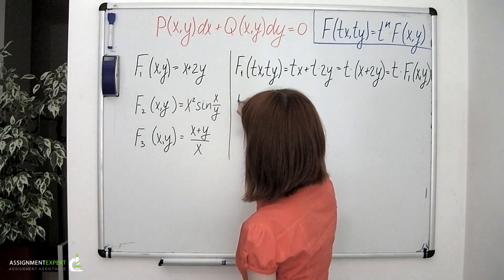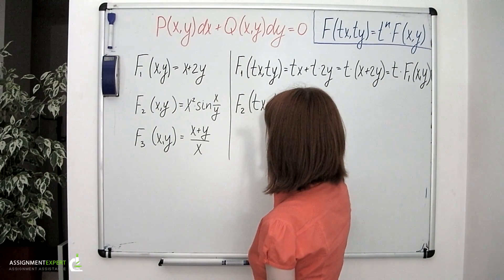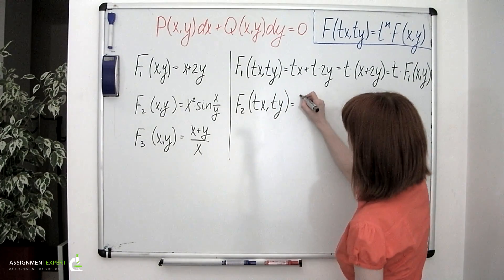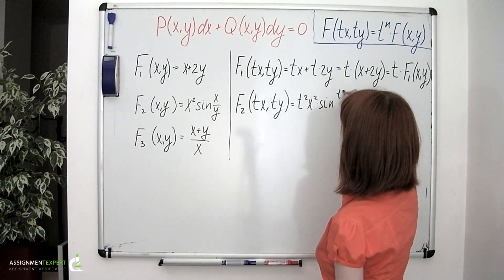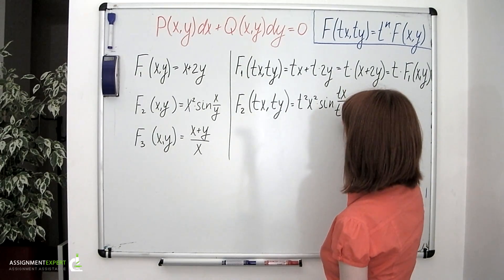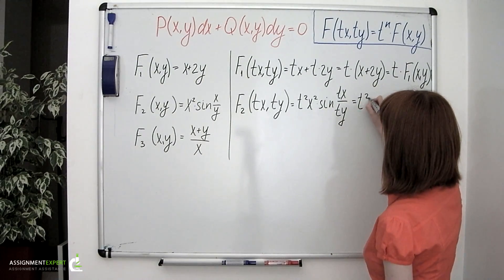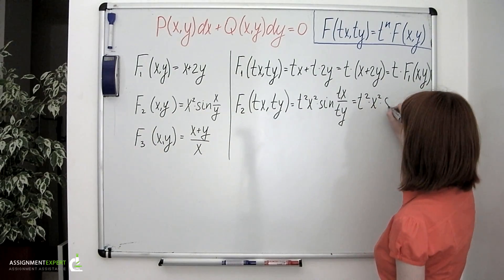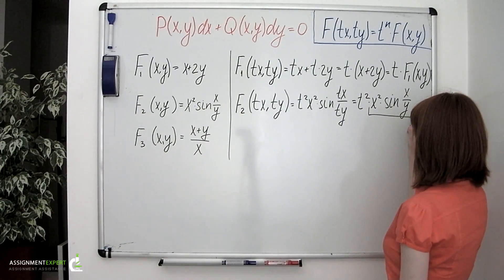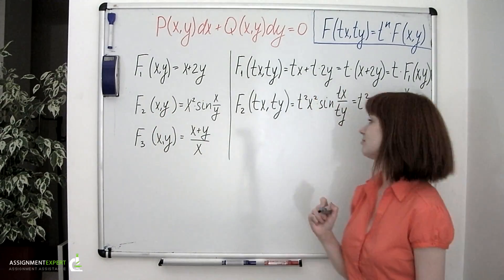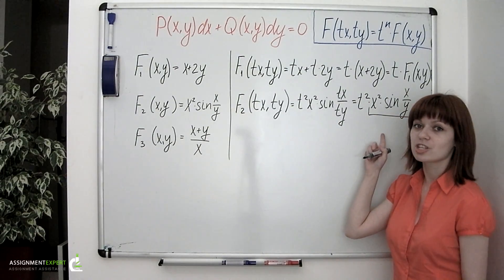Let's move on to the second one. f2 of tx and ty equals t squared times x squared times sine of tx over ty, which is equal to t squared times x squared times sine of x over y. And what we have here is the function f2. t is taken to the second power, so the second function is homogeneous of the second degree.